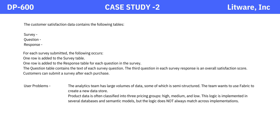User problems. The analytics team has large volumes of data, some of which is semi-structured. The team wants to use Fabric to create a new data store. Product data is often classified into three pricing groups — high, medium, and low — but this logic is implemented in several databases and semantic models, and the logic does not always match across implementations.